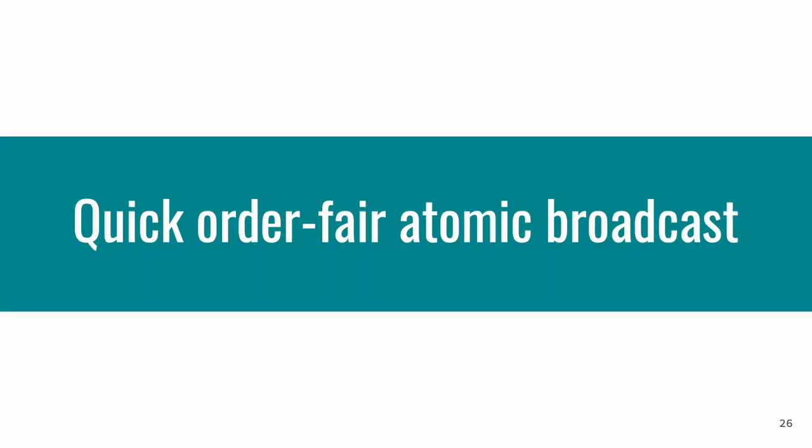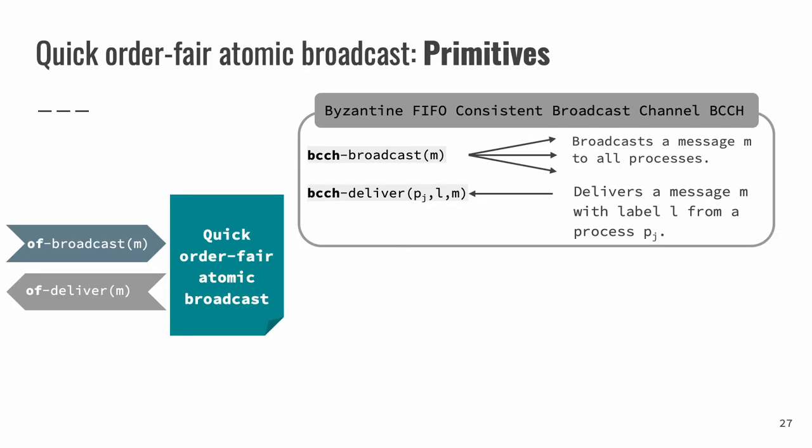Now, when all properties are defined, we can move to the implementation of the protocol and this implementation is called quick order fair atomic broadcast. And in the following slides, we will show you an example of how our algorithm is executed. And towards the end of the presentation, we will discuss complexity of the protocol. So first, let's start from defining the primitives that we will use in our algorithm.